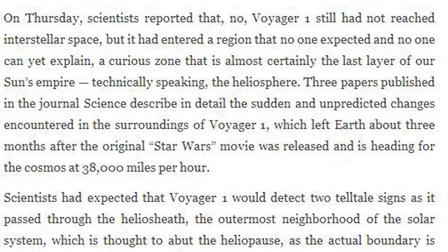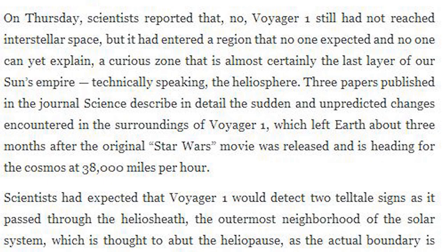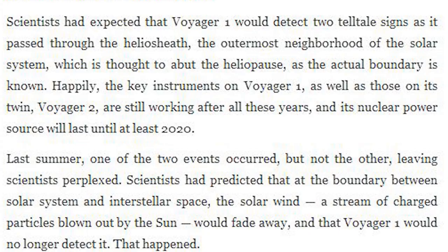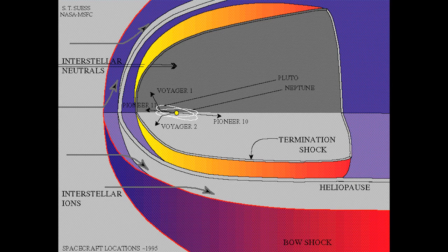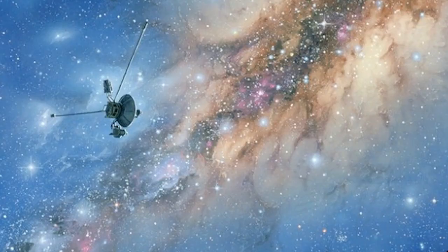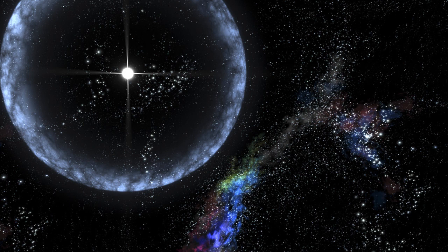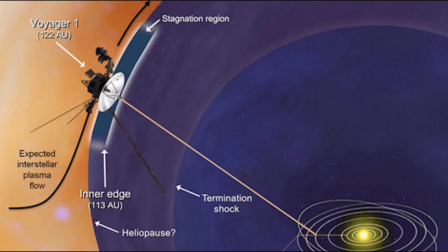Technically speaking, the Sun's Empire, according to science, is the heliosphere. Three papers published by Official Science detail the sudden and unpredicted changes encountered in the surroundings of Voyager Uno. Science predicted two telltale signs. One of the events occurred, but not the other. Yes, charged particles from solar wind faded out. No, the magnetic field did not change. Well, to me, maybe it's like I Heart Huckabees, and it's less a field and more just a big uniform blanket. The universe is your whoopee, buddy.